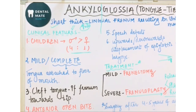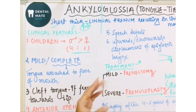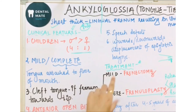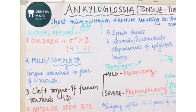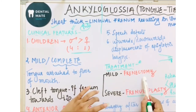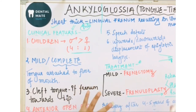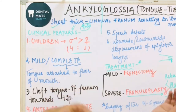To revise quickly: ankyloglossia involves a short, thick lingual frenum, more commonly seen in boys at a ratio of 4 to 1. It can be mild or complete. If the frenum is attached towards the tip, it may cause a cleft of the tongue. There can be anterior open bite due to inability to move the tongue, altered swallowing pattern, speech defects, and displacement of the epiglottis and larynx. For treatment, mild cases require frenectomy; severe cases require frenuloplasty with release and repair. Surgery should be done after 4 to 5 years of age.